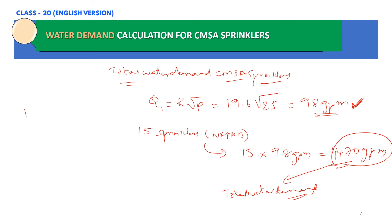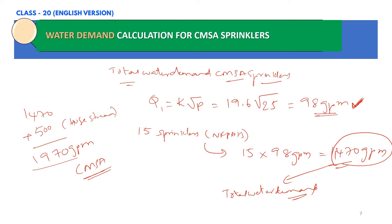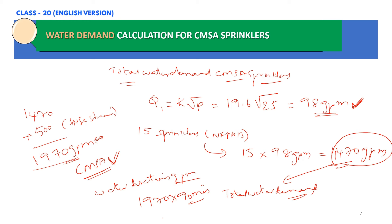We now add the sprinkler demand of 1,470 GPM to the hose stream allowance of 500 GPM, giving a total water demand of approximately 1,970 GPM for this storage warehouse with CMSA sprinklers. The water tank capacity is then calculated as 1,970 GPM multiplied by the 90-minute duration, resulting in approximately 177,300 gallons. The water tank capacity shall be a minimum of 177,300 gallons, and the pump selection will be based on this total water demand.